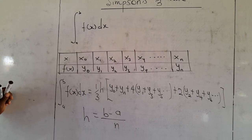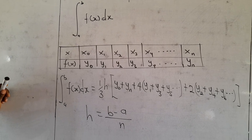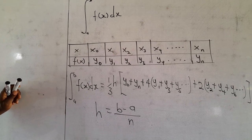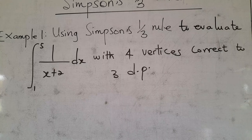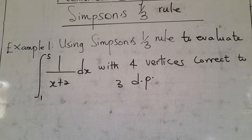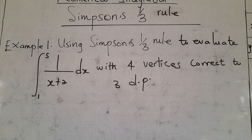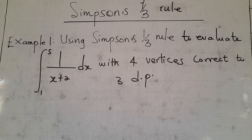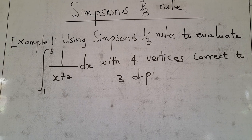Now we take some sample equations and see how we can evaluate finite integrals using Simpson's 1/3 rule. Our first example says: use Simpson's 1/3 rule to evaluate the integral from 1 to 5 of the function 1/(x+2) dx with 4 subintervals, correct to 3 decimal places.